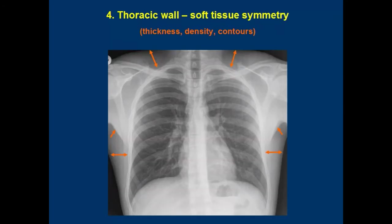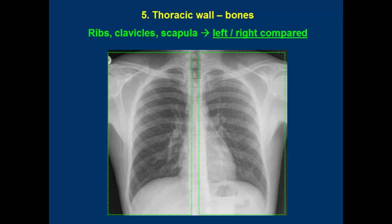4. Thoracic wall soft tissue. Take a quick look at thickness, density and contours, left and right compared. You don't have to take precise measurements; a visual comparison will suffice. Don't forget about the breasts — you can't actually analyze their structure, but you should check their position to avoid confusing them with pulmonary lesions.